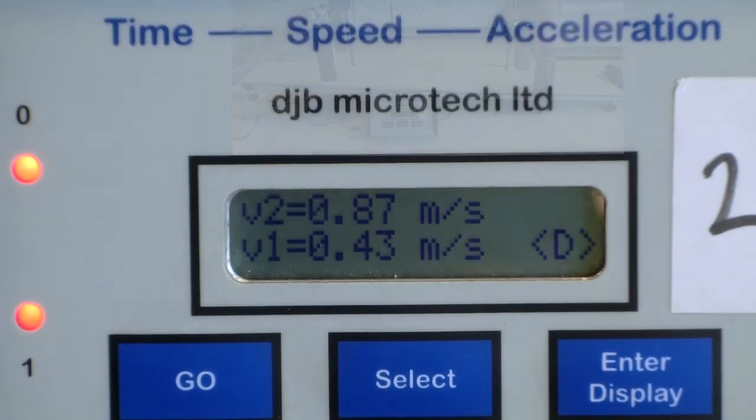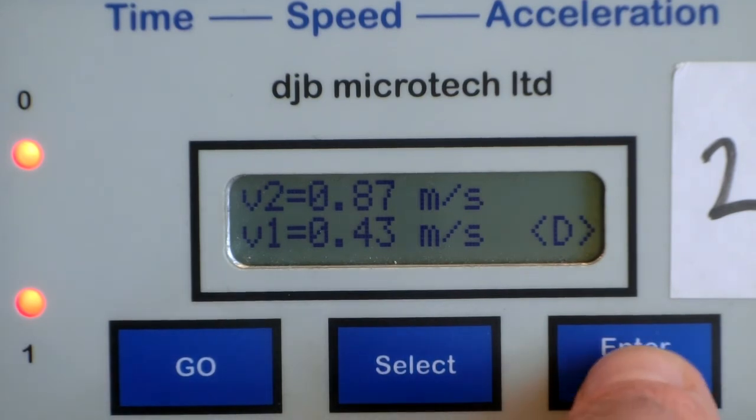The results can then be repeated five times to get an average acceleration down the slope.